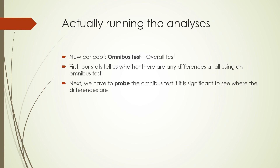When we run these analyses, we first run what's called an omnibus test — the overall ANOVA test. What this does is simply ask: is there at least one significant difference somewhere between those three means? We have an average for the affirmation condition, an average for the control condition, and an average for the backlash condition. The omnibus test asks whether there is at least one significant difference somewhere among those means, but it doesn't tell us where. If there is no significant difference, we stop there. However, if there is a significant difference, we need to probe that omnibus test.